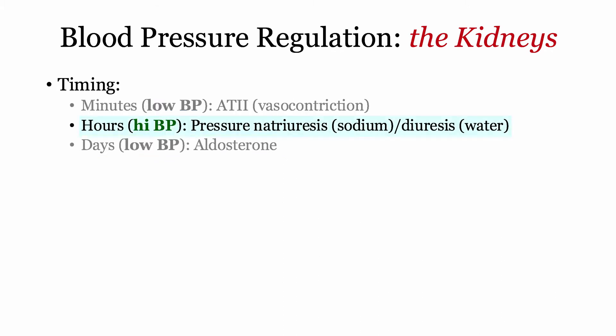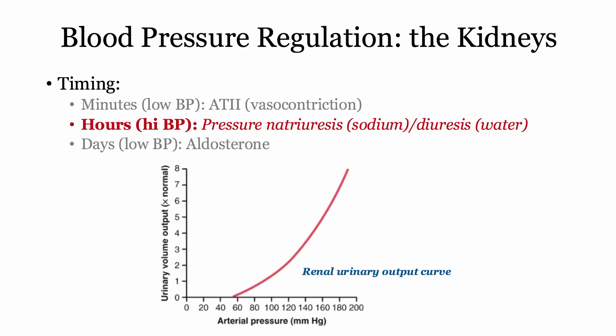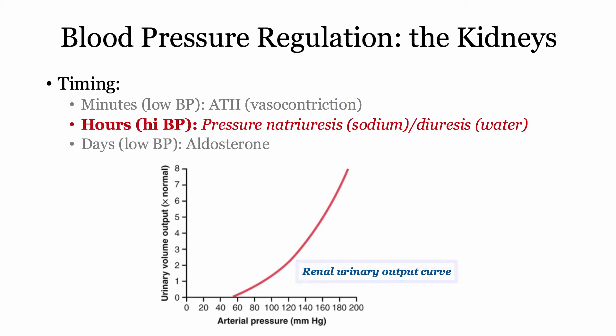On the other hand, if the blood pressure gets too high, the kidney can respond through a process called pressure natriuresis, where we secrete excess sodium, and/or the process of pressure diuresis, where we secrete excess water. And here's what that looks like. This graphic demonstrates the urinary output curve. You can see, as the mean arterial pressure rises, the urine output can double, triple, and beyond.